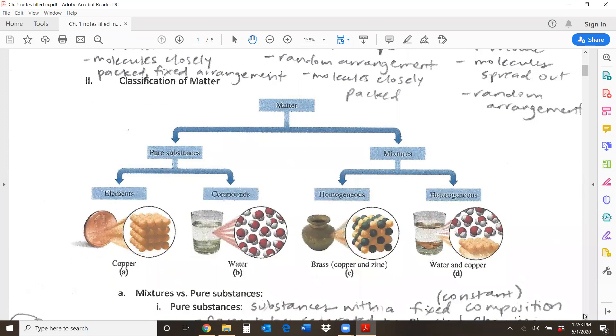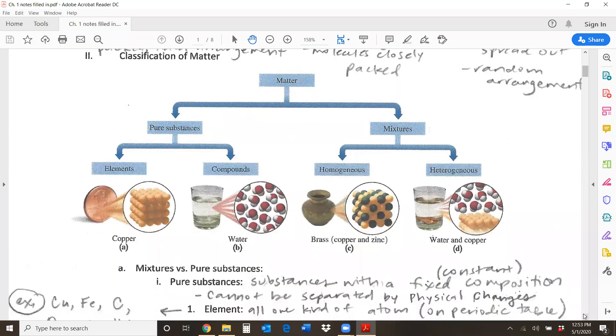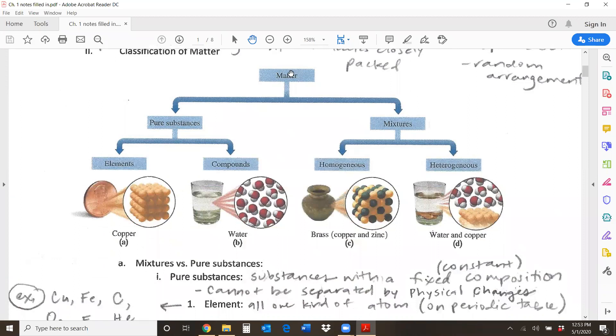We classify matter by putting it into different categories. So here we can see in this chart matter can be put into two big categories, pure substances and mixtures. And then we can further break these down. So let's talk about each one.